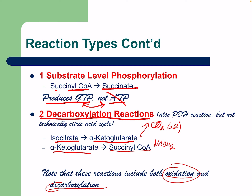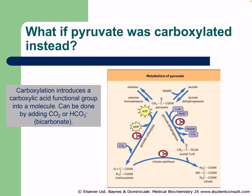What if pyruvate were carboxylated instead of going through pyruvate dehydrogenase? Pyruvate can be carboxylated by pyruvate carboxylase, becoming oxaloacetate directly. Carboxylation introduces a carboxylic acid functional group by adding CO2 or bicarbonate (HCO3−) — we're actually adding a CO2 — forming oxaloacetate, which then enters the citric acid cycle.